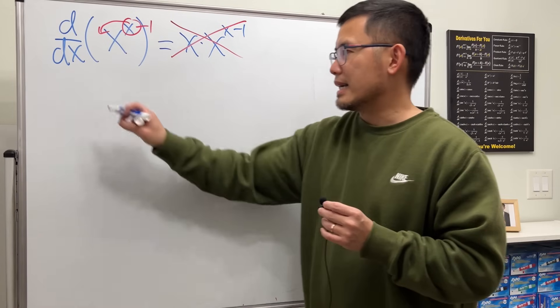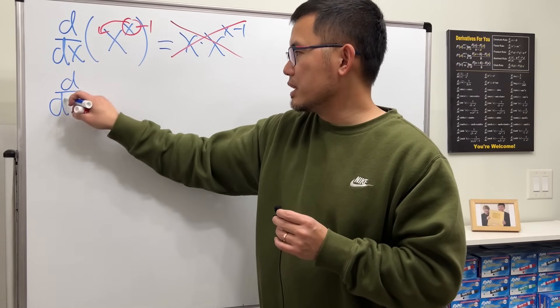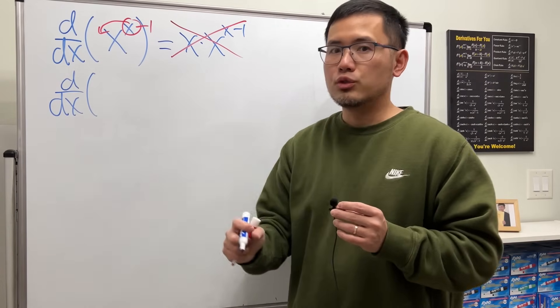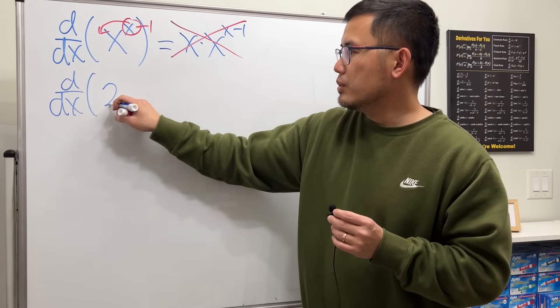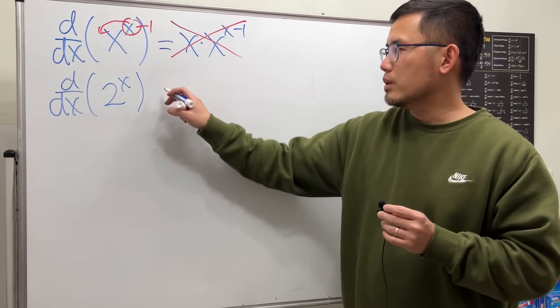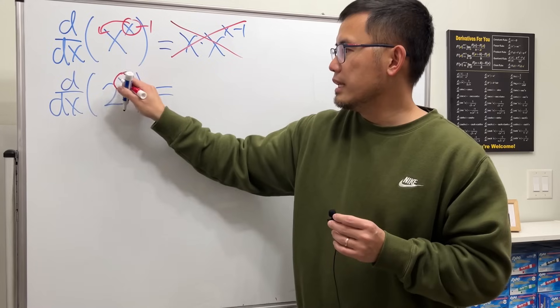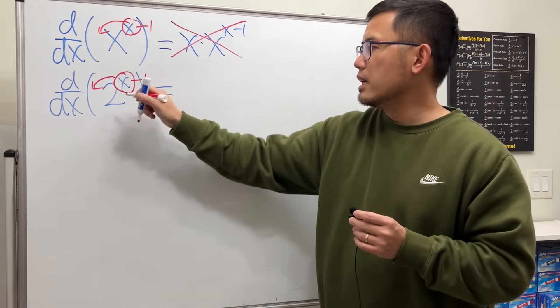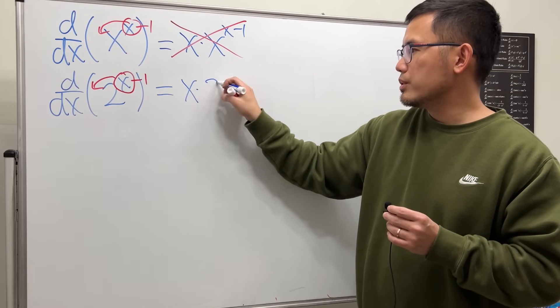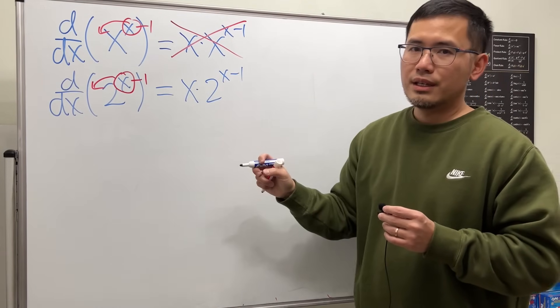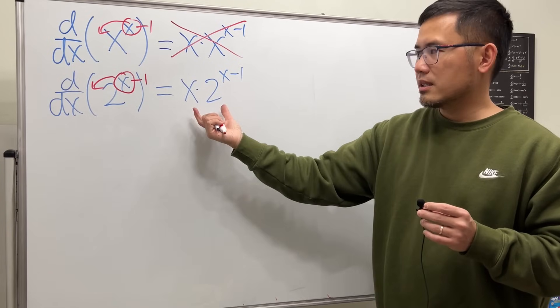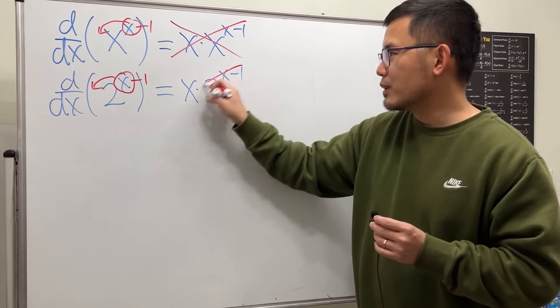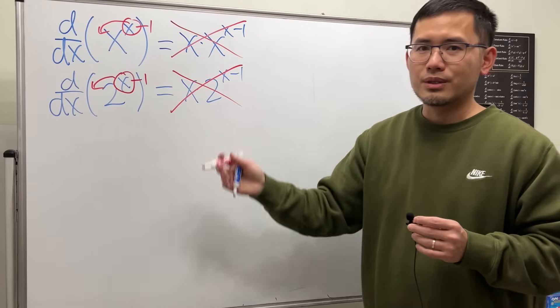Another example is if we take the derivative of an exponential function, let's say we have 2 to the x power. Well, if I put the x to the front and then minus 1 and say the answer is x times 2 to the x minus 1, this time I cannot simplify anything. But let me tell you, it's the calculus that's wrong. That's still wrong, too.